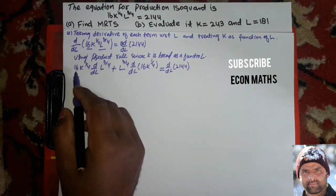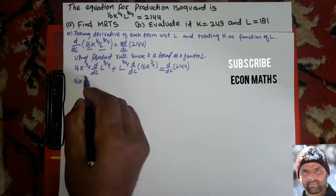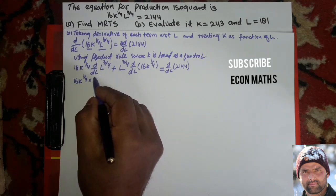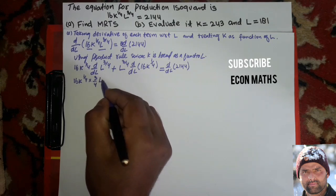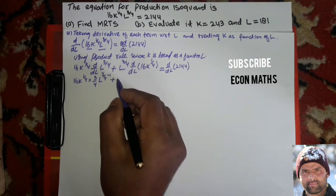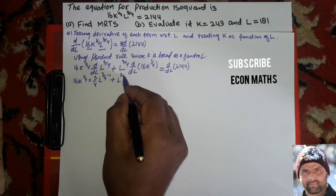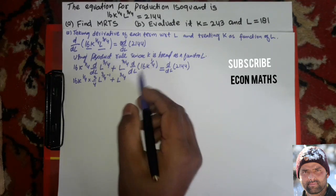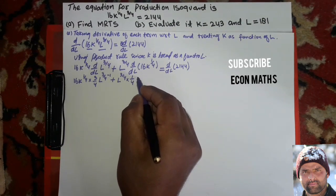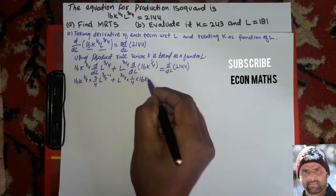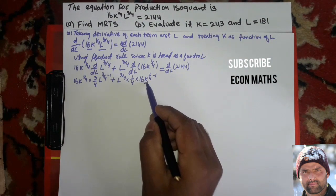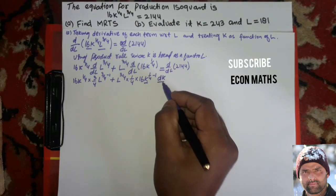16 k to the power 1/4 remains as it is, and the derivative of L to the power 3/4: the 3/4 becomes the coefficient of L, giving 3/4 times L to the power 3/4 minus 1. Plus, L to the power 3/4 remains the same, and differentiating 16 k to the power 1/4: the 1/4 comes as a coefficient, giving 1/4 times 16 k to the power 1/4 minus 1, times dk/dL.